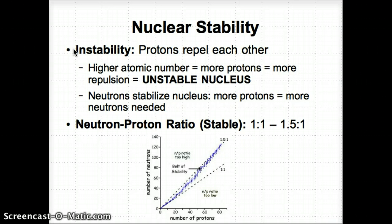What we're talking about first is instability. All the protons in the nucleus will actually repel each other. Generally, the higher the atomic number for any specific atom, the more protons you have. Because protons both have positive charges, they'll generally repel or go away from each other, and that's what makes a nucleus unstable. Neutrons are able to stabilize the nucleus because they have a neutral charge.